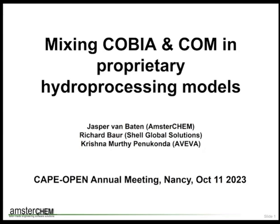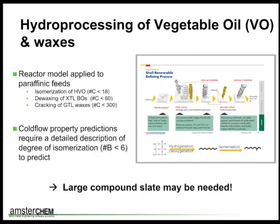Thank you Michelle for that convenient introduction. Catalytic de-waxing, or hydro-isomerization, is the process I've been implementing on behalf of Shell. We did implement the process model largely. The process involves isomerization of paraffinic, normal paraffinic feedstock.